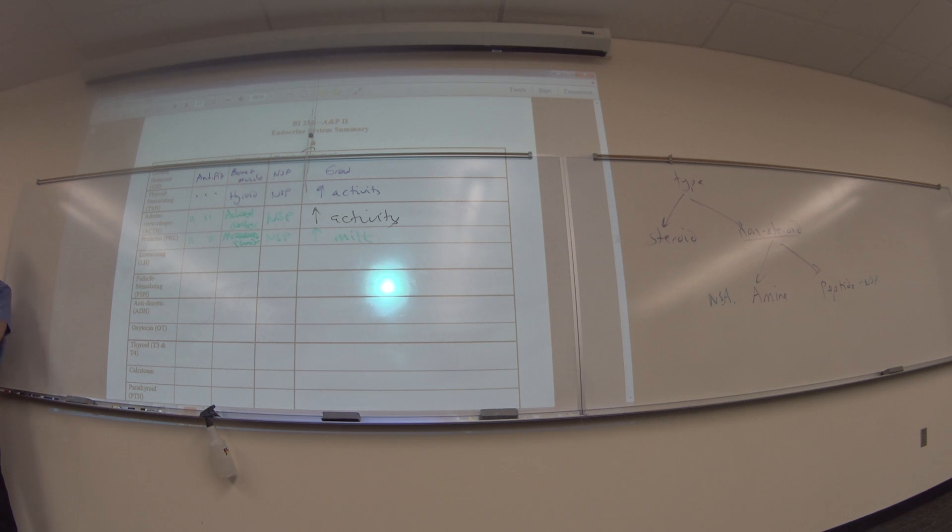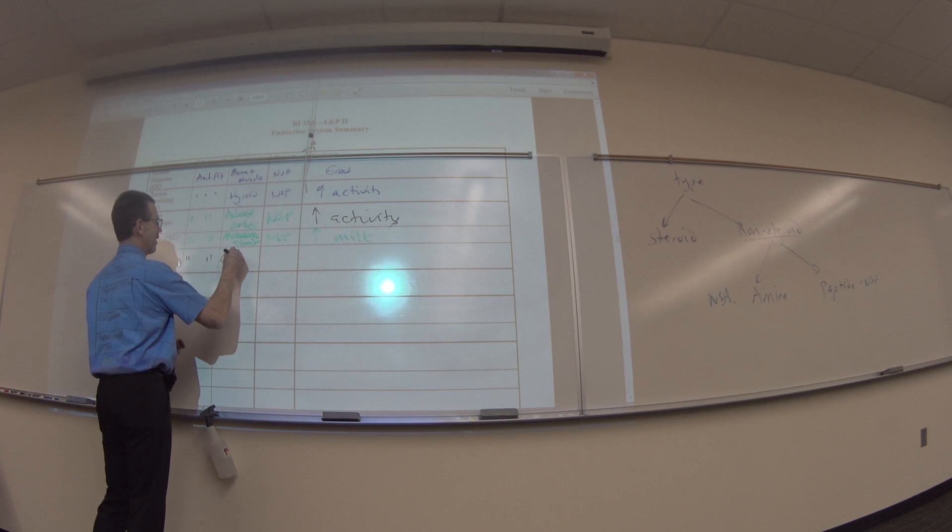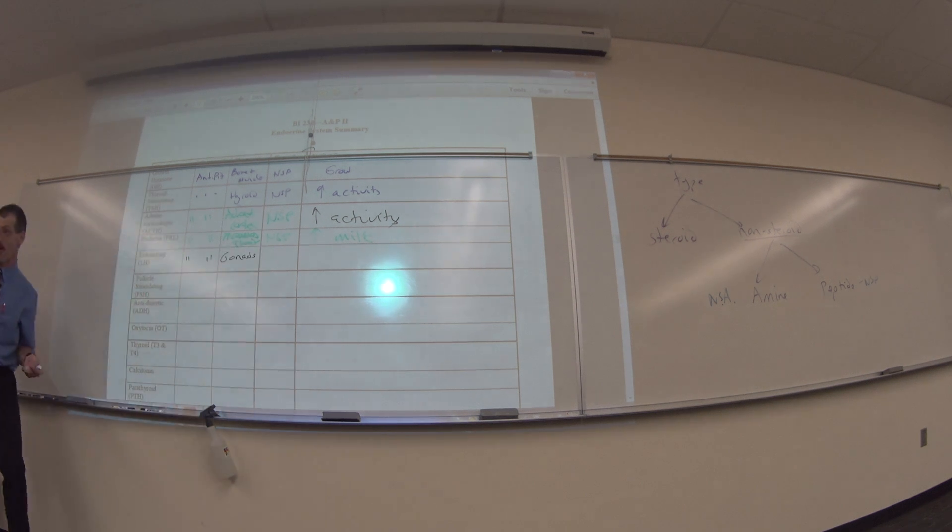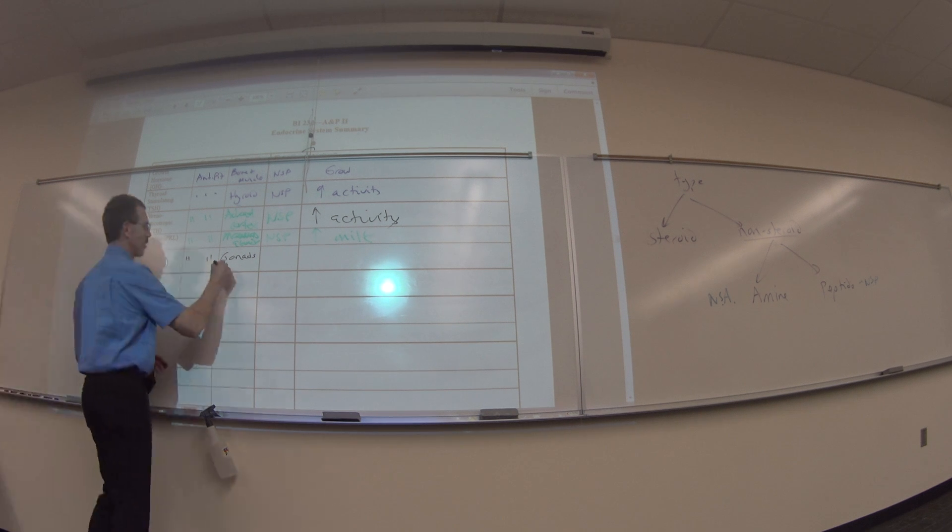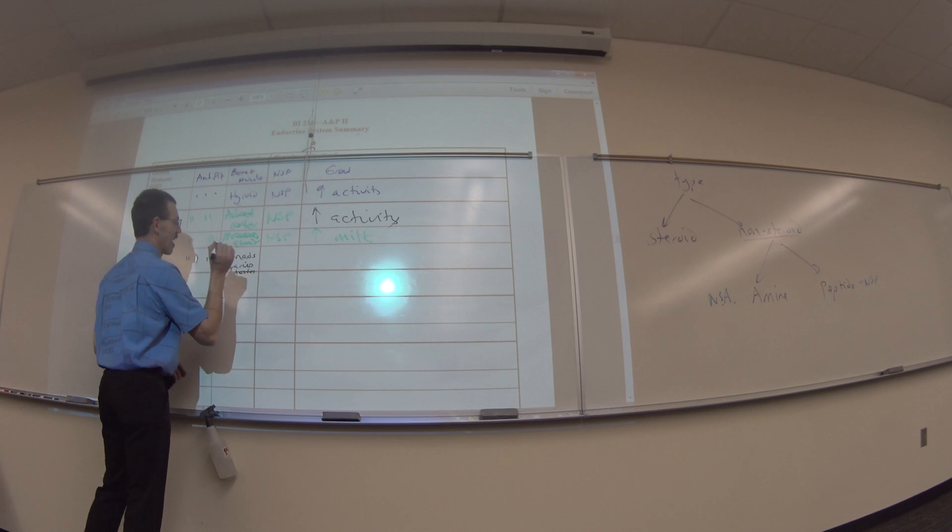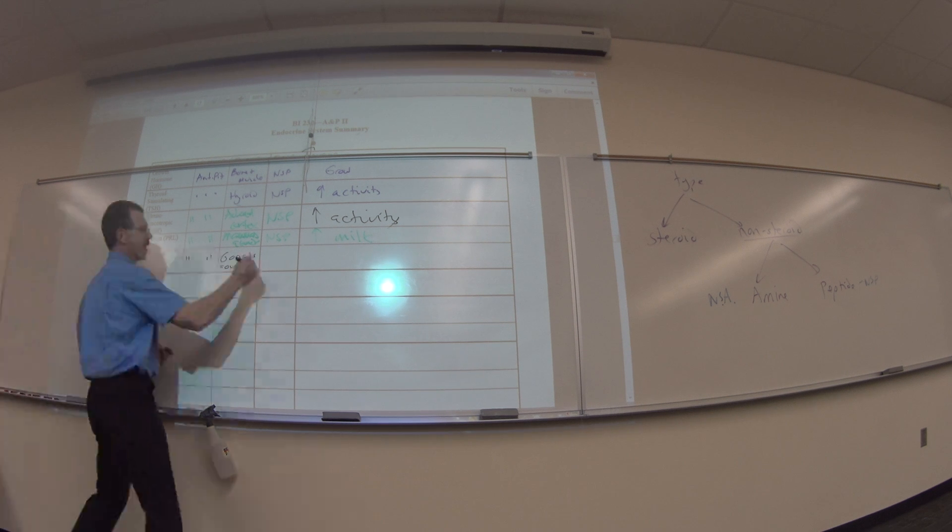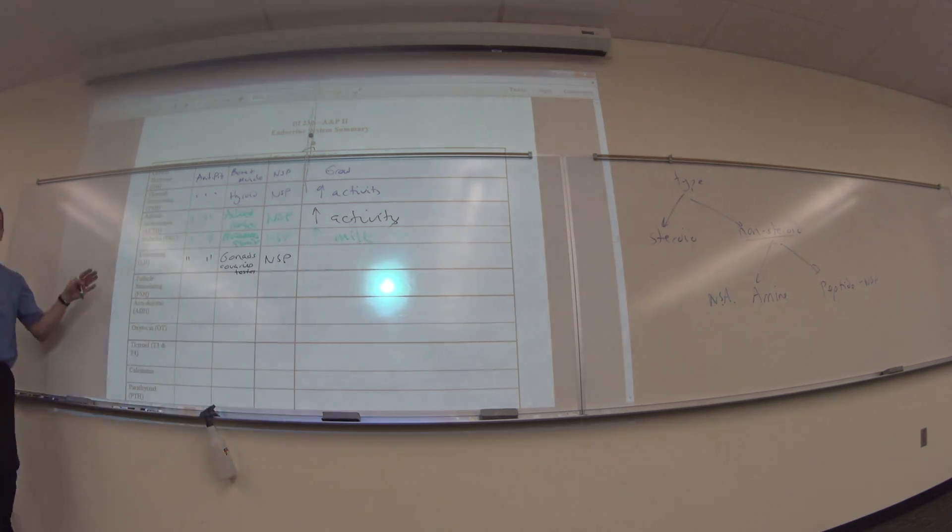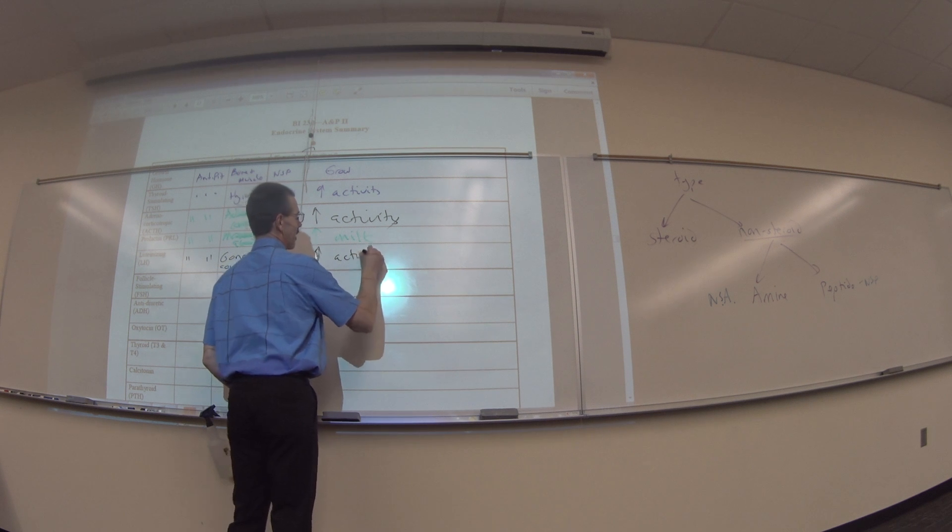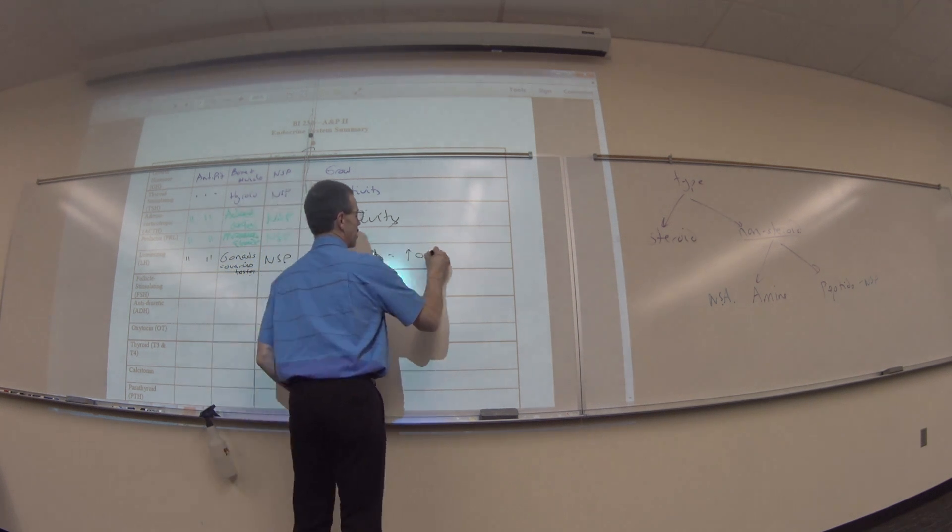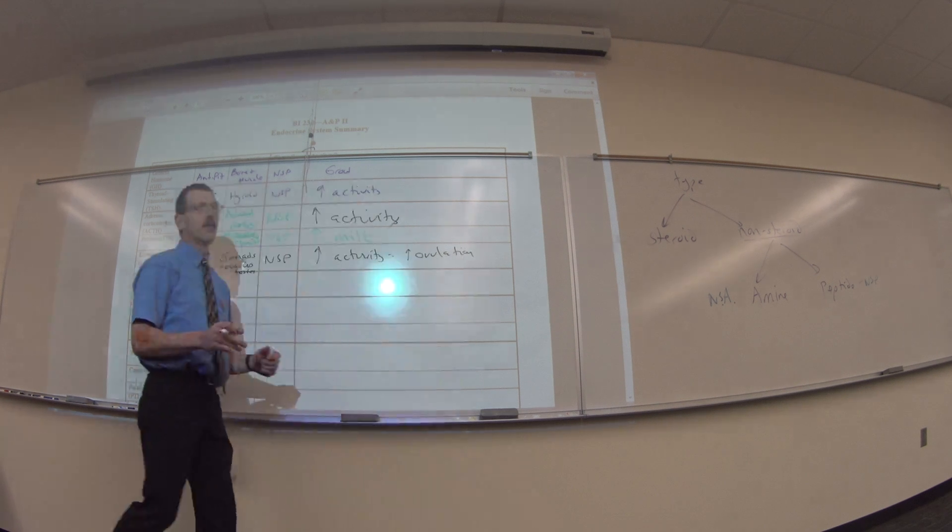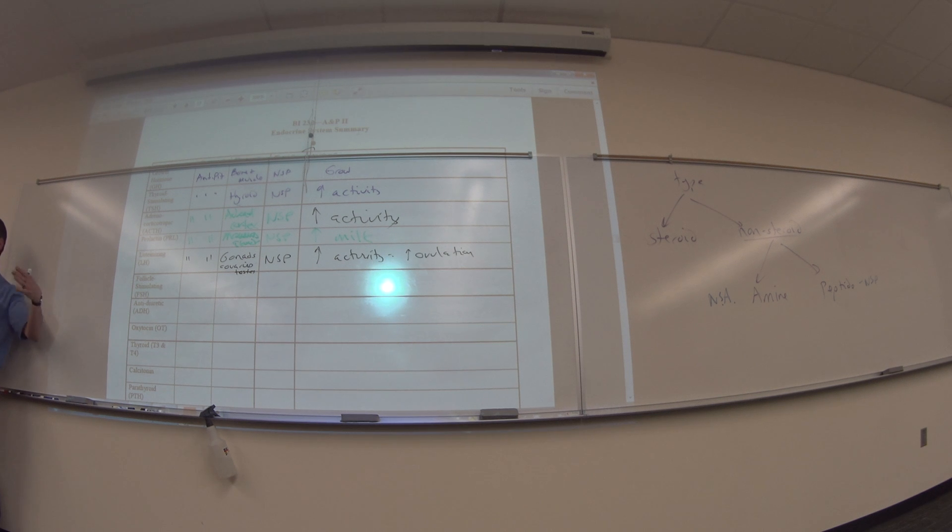Luteinizing. Where's it made? Anterior pituitary. Where do you think it goes? Gonads. There's a good word from 112. Can someone remind me where your gonads are? Ovaries and testes. If you don't like gonads, you can write ovaries or testes. What type is it? It is a peptide, an NSP. Can someone tell me what luteinizing hormone does to your gonads? It does stimulate them. So it increases activity, also increases ovulation if you're a female. So right now it's increasing the activity of your gonads.